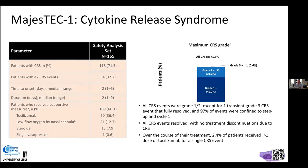Regarding CRS toxicity with teclistamab: any-grade CRS was around 75%, less than the 90%+ seen with CAR T-cells. Clinically significant CRS at grade 2 or more was 32%, though CAR T-cell studies typically report grade 3+, accounting for the numerical difference. Onset usually occurs within 2 days. Grade 1 was the predominant level; only one patient had grade 3 CRS (0.6%). Many patients now receive tocilizumab and steroids earlier than in initial CAR T-cell studies.